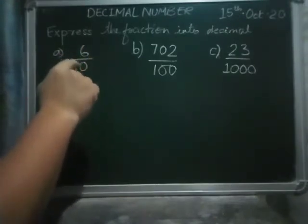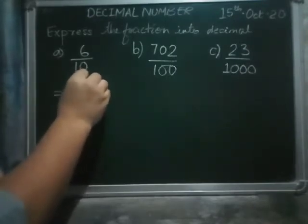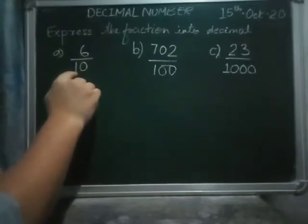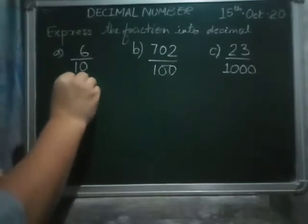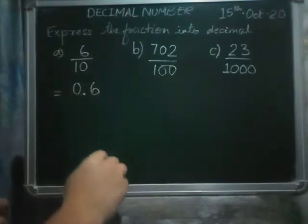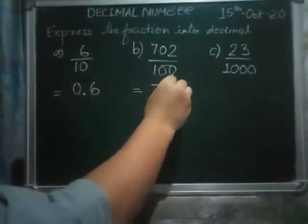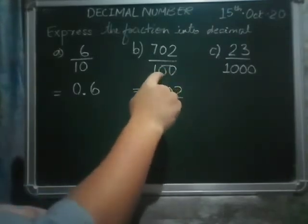6 by 10 means if there is only one zero in the denominator below, we will just have to write the answer as 0.6. In this case, 702 over 100, there are two zeros.